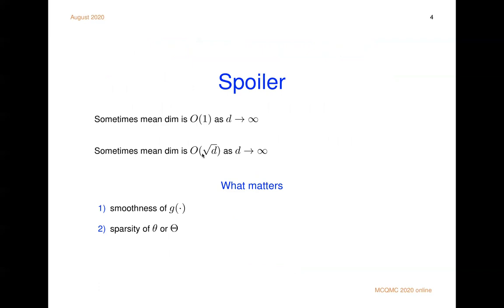Smoothness of g makes a difference. And a second order thing is sparsity of theta or capital theta. That makes a difference too. And I want to tout a trick called pre-integration. Pre-integration can turn one of these into one of those. I'll show you an example later.